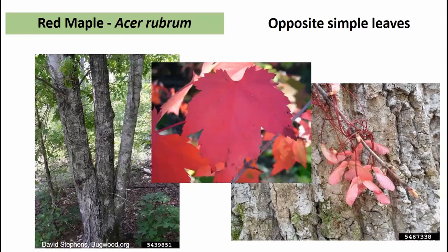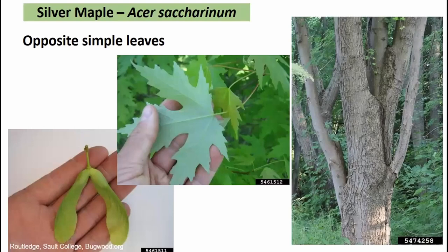Red maple is one of our soft maples — categorized not only by relatively less dense wood but also by flowering and producing seed early in spring and summer. It can be found on a wide variety of sites from wet to dry. It has opposite simple leaves with sharp margins, more tooth than sugar maple, little V-shaped sinuses between the lobes, and typically three to five lobes. Its fall color often leans toward reds and maroons, and the small winged seeds also tend to be reddish in spring.